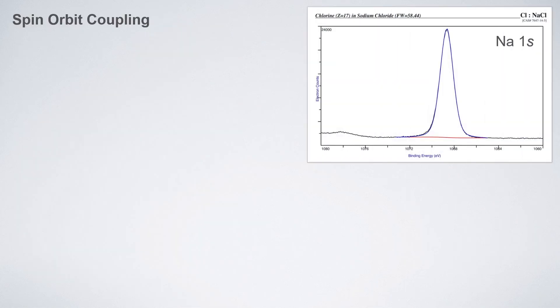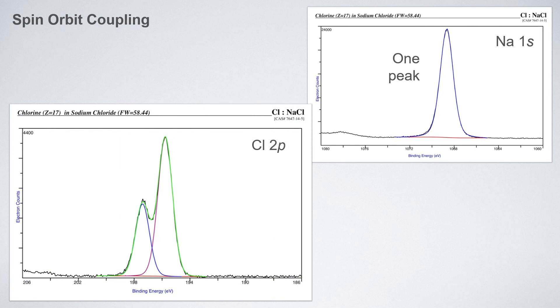When we try to analyze the XPS data, we can see that some of the peaks show a sharp single peak, like in case of sodium 1s as shown here. In some cases the peak is split into two parts, for example as in case of chlorine 2p. This peak splitting is observed due to spin-orbital coupling.